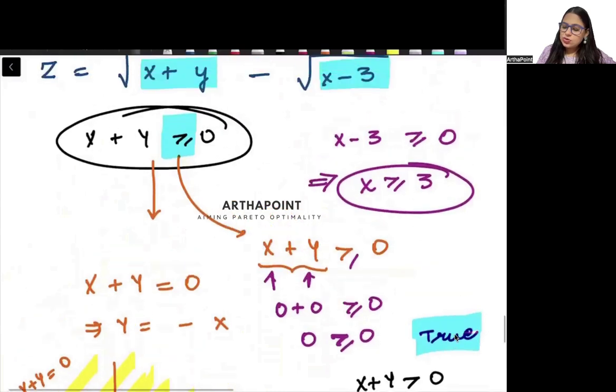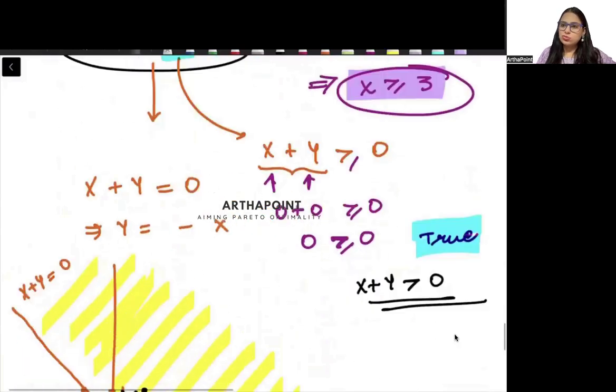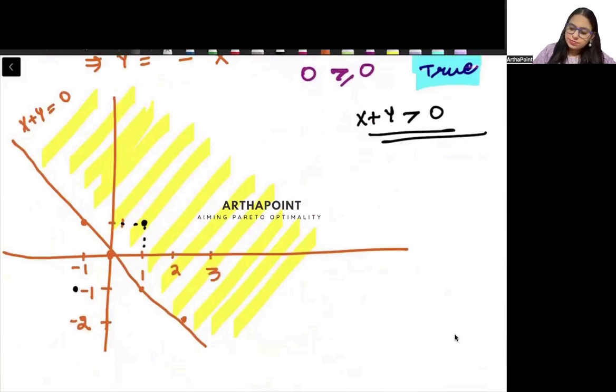Now the second part goes ahead and says that x has to be greater than or equal to 3. So equal to 3 will be this. When x is 3, this will be at minus 3 on this line. And here this is x equal to 3 line. Greater than or equal to 3 means this.